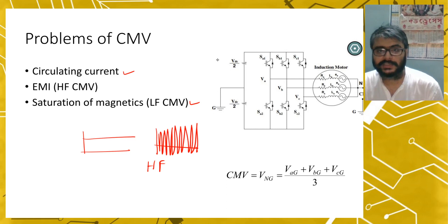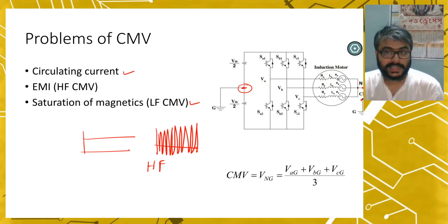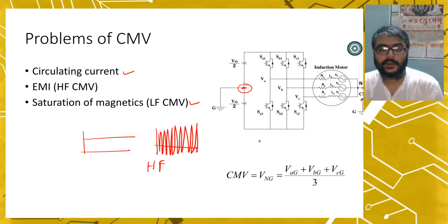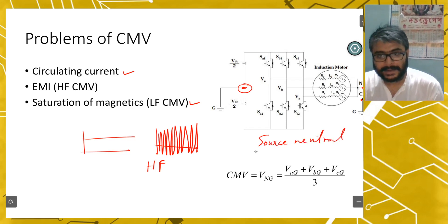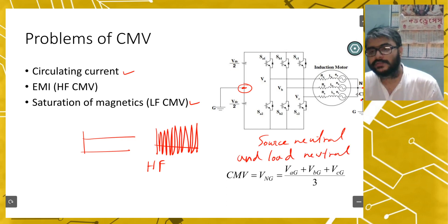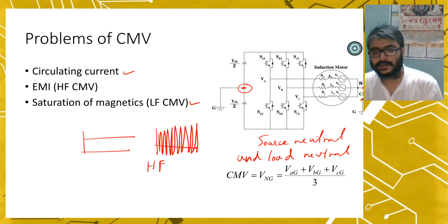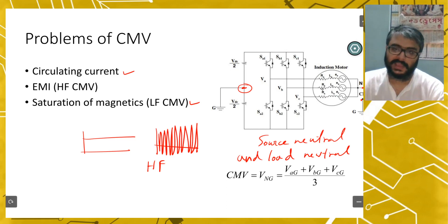Here we have shown a three-phase inverter. Usually in a three-phase inverter, the source side is sometimes grounded. The common mode voltage will appear between this point and the ground point. Common mode voltage in a three-phase inverter is also defined as the voltage between the source neutral point and the load neutral point. When the loads or branches in the three-phase system are balanced — meaning all the impedances RA, RS, LS are equal — it will work like a balanced load.